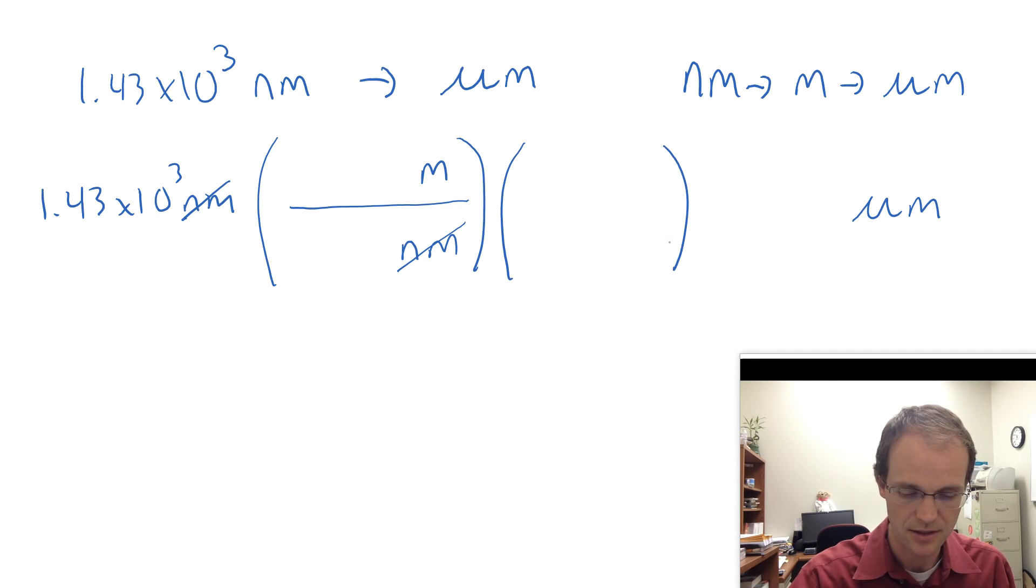OK. And then in our second conversion there, what's got to go up? Well, micrometers has to go in the top because that's what we're trying to get to. Meters has to go in the bottom because we're trying to cancel it out. And then we can put in our numbers.